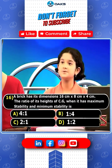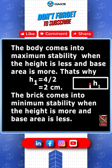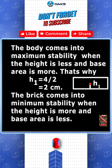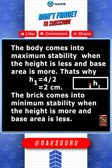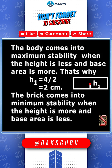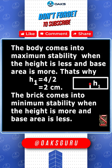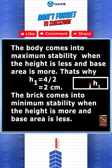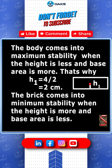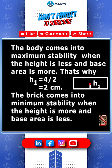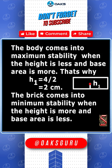My answer is B. The body comes into maximum stability when the height is less and base area is more. That's why H1 is equal to 4 divided by 2, that is equal to 2 cm.